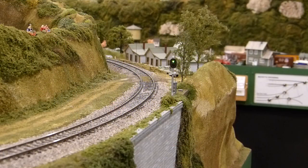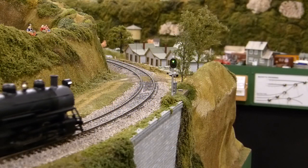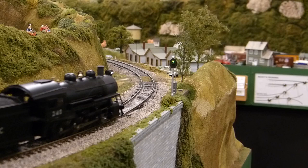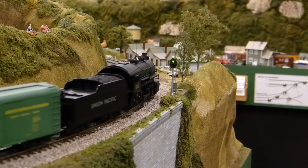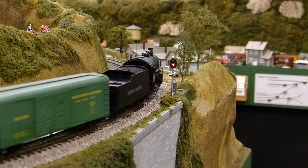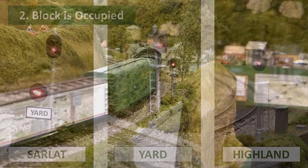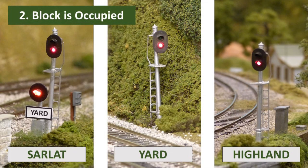As seen here at Highland, the block signal is displaying green, so the train enters the block. When the Arduino senses that the block is occupied, it sets all signals to red. If the block is occupied with a train, then all block signals and the tall dwarf yard permission signal at Sarlott Viaduct show red, so that no additional trains can enter the block.